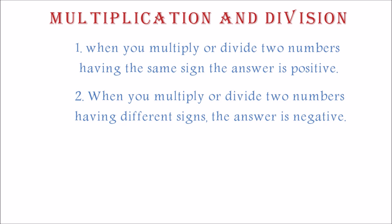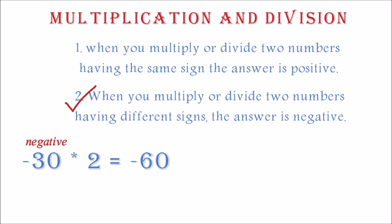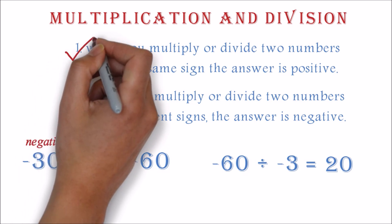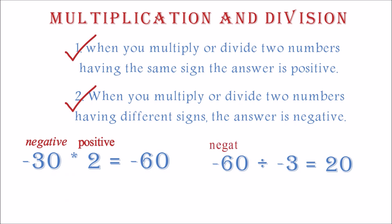Please do not confuse this with the rules of addition and subtraction. Example: negative thirty times two will be negative sixty. The answer is negative because they have different signs — one value is negative and the other is positive. Notice that we are spending no time explaining the actual multiplication because it is exactly like what we did for whole numbers. The only new thing is the negatives. Example two: negative sixty divided by negative three equals twenty. The answer is positive because both numbers have the same sign — both are negative.